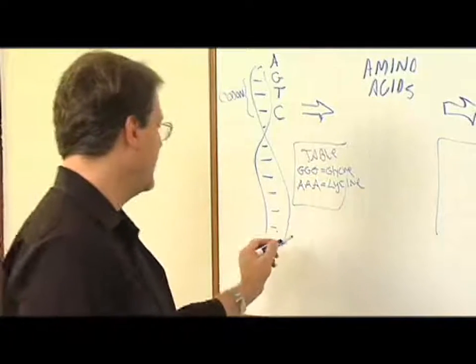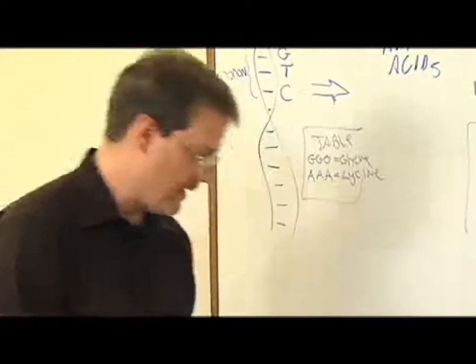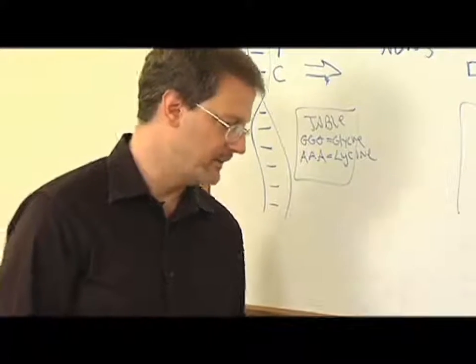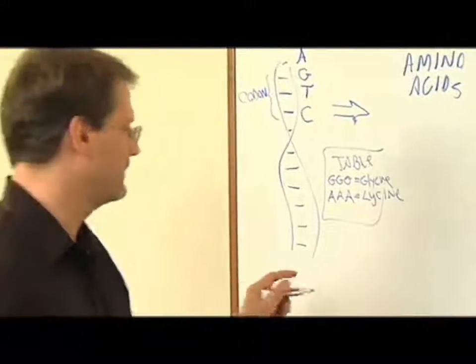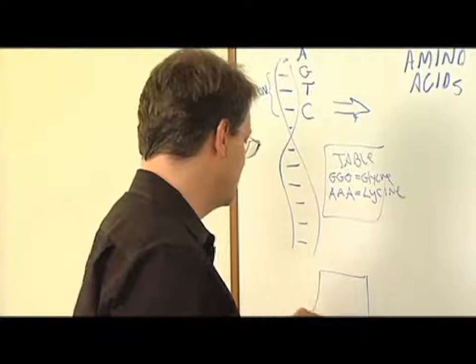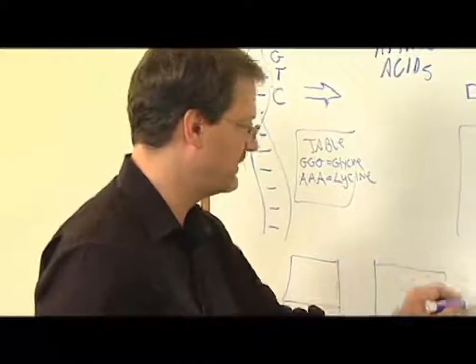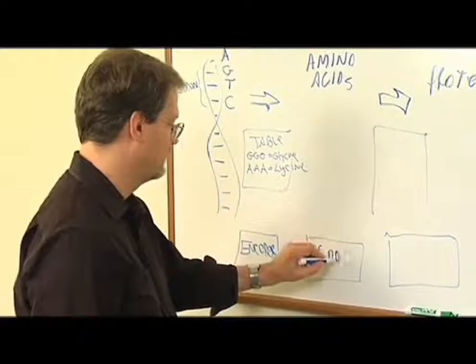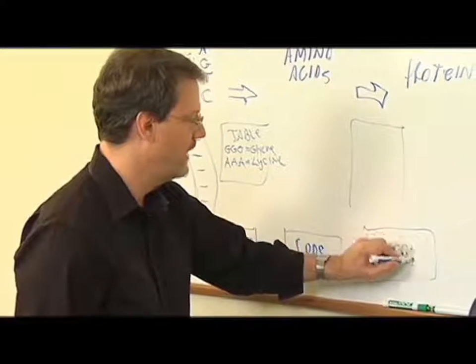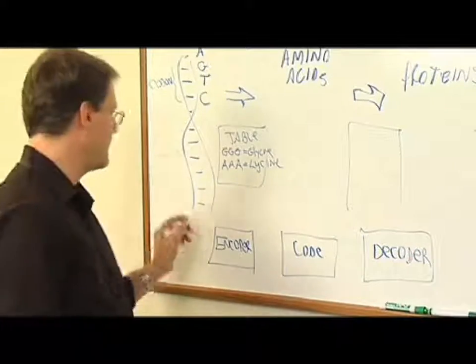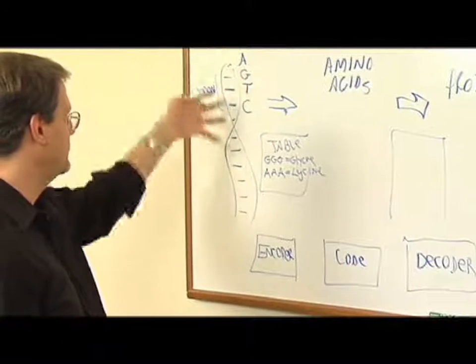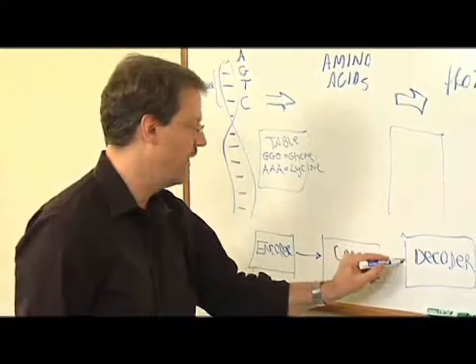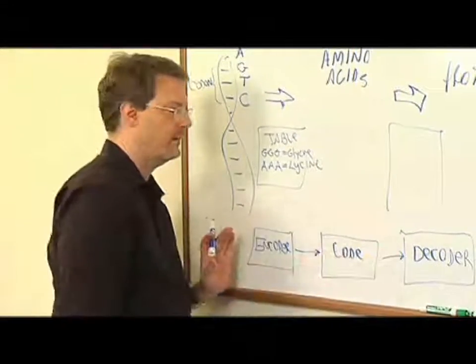And so if you read this book here, it's called Information Theory, Evolution and the Origin of Life by Hubert Yaqui, he explains in Chapter 5 why this process perfectly matches the diagram of a communication system, which I am drawing right now, which is encoder, code, and decoder. And Yaqui explains that the process of going from ACs and Gs and Ts, they get encoded into amino acids and decoded into proteins, that this is a communication process.